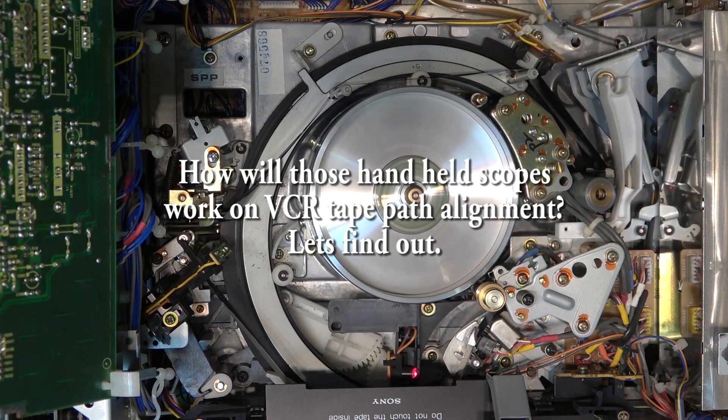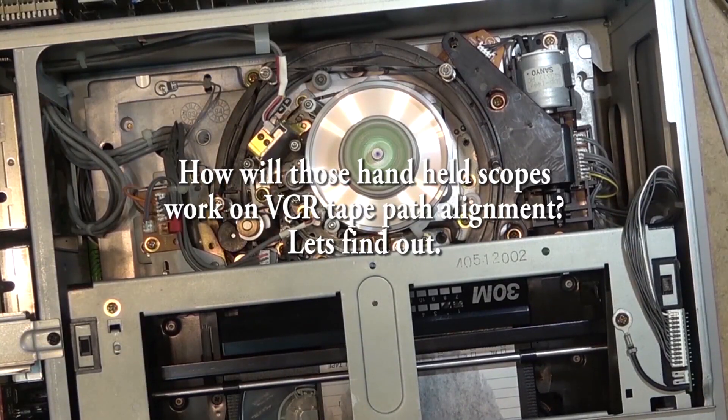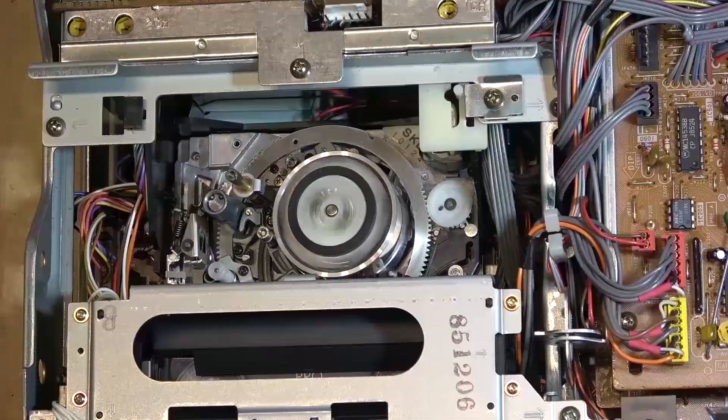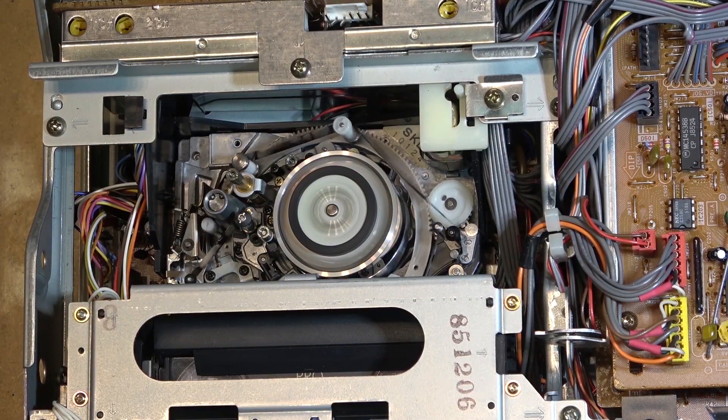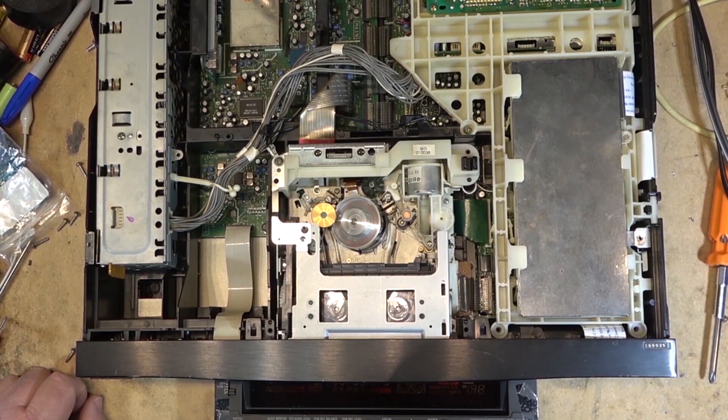As promised last week, I'm going to take another look at those two handheld oscilloscopes that I got. We're going to try them in the real world to align a VCR, just the tape path.